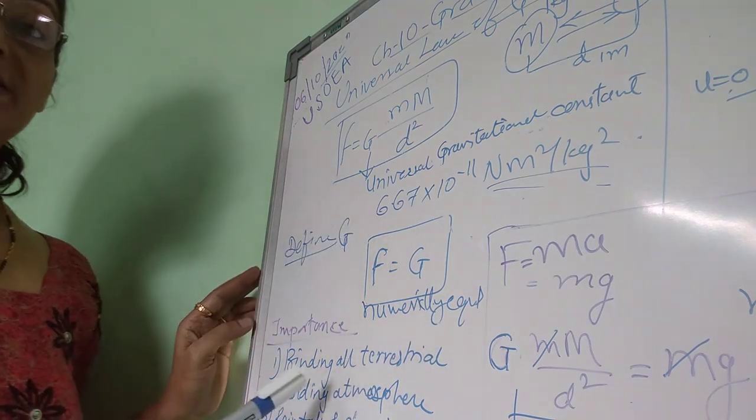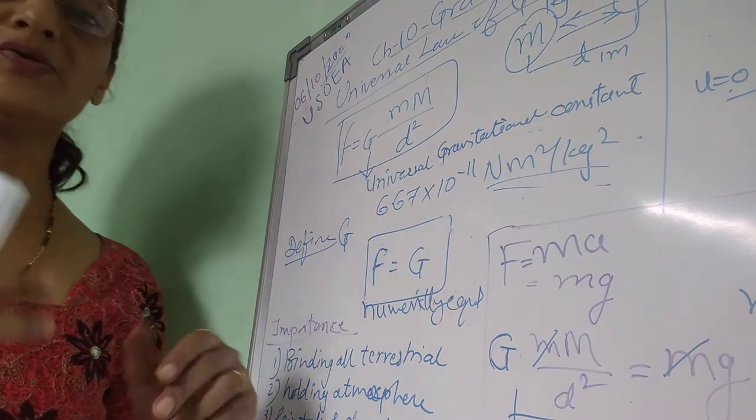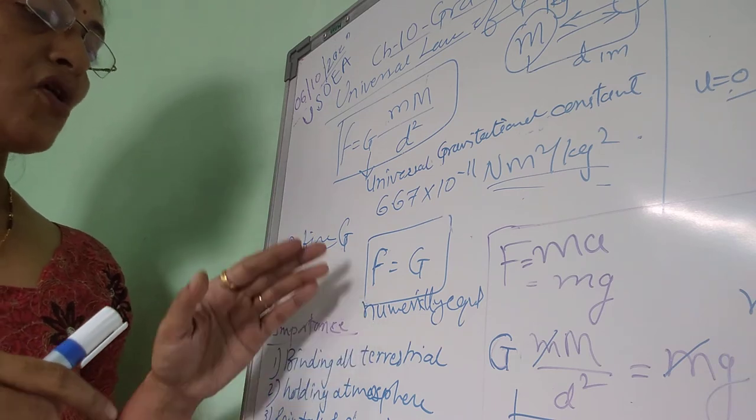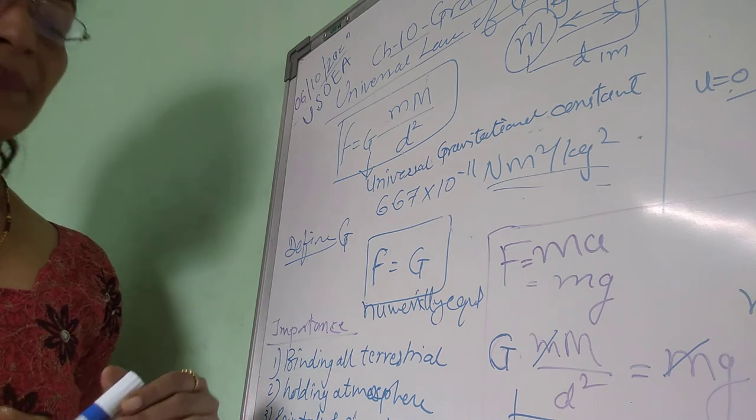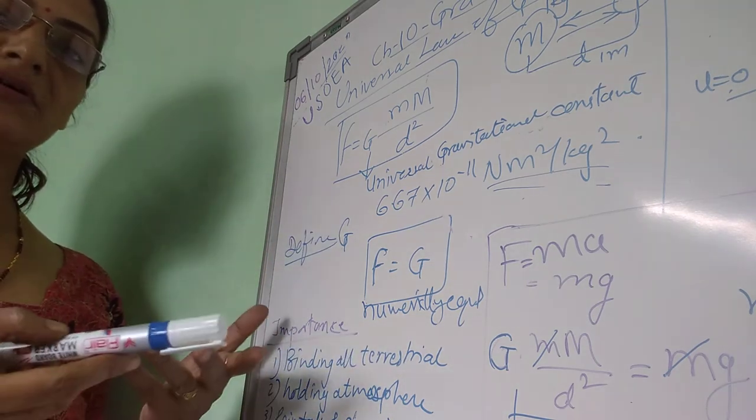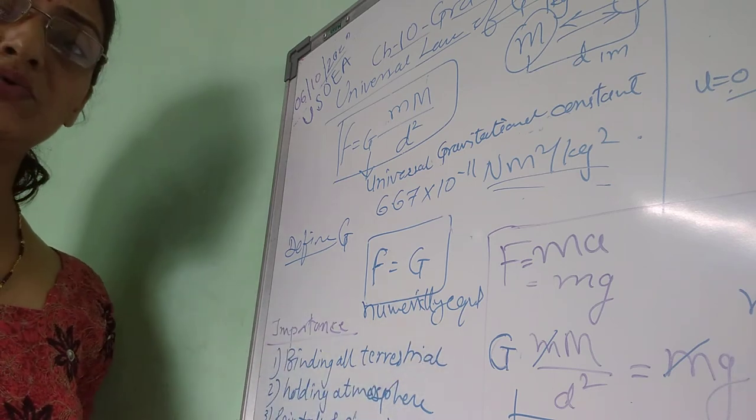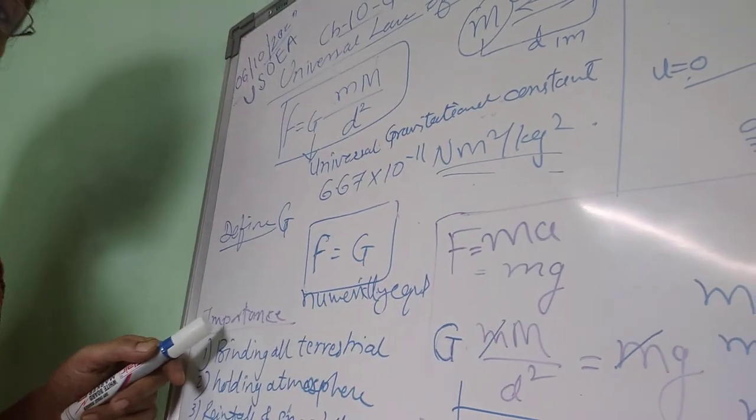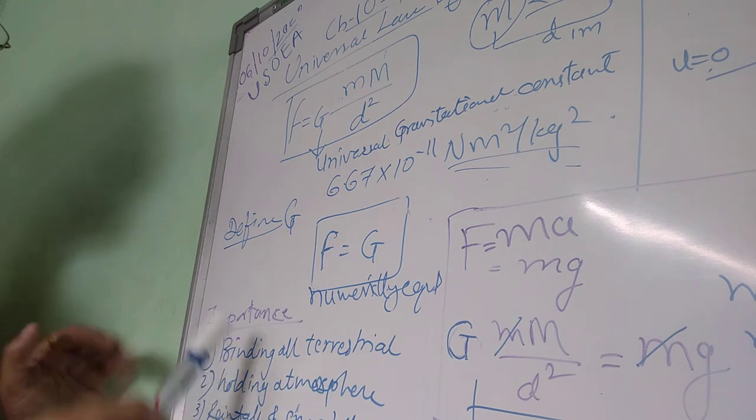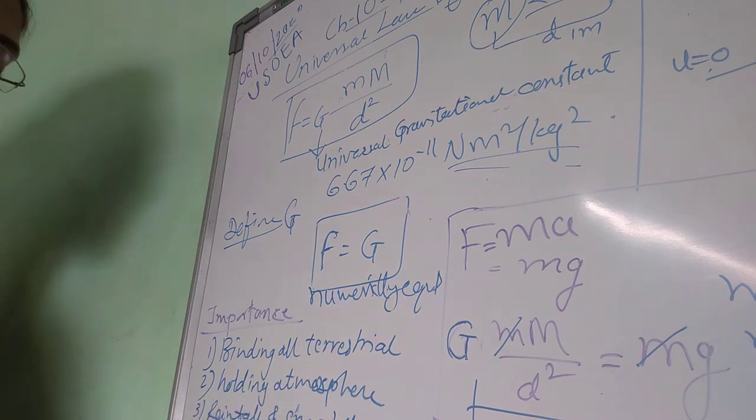Next question is: we are studying this law, but what is the significance, what is the importance of the law? That question was asked many times. You can now focus on the importance of this law. We all are bound to the earth - all the terrestrial objects. Binding all the terrestrial objects to the earth is due to the universal gravitational law. Holding the atmosphere around the earth is due to the gravitational law. Rainfall or snowfall on the earth.